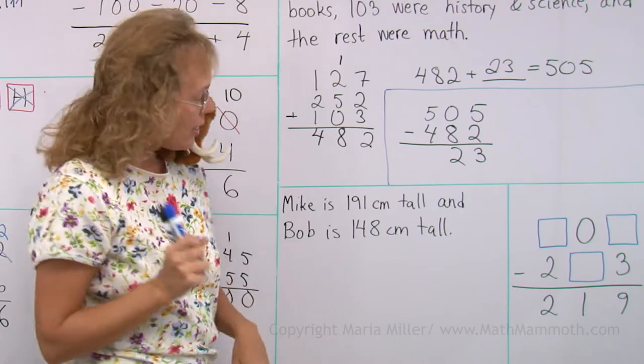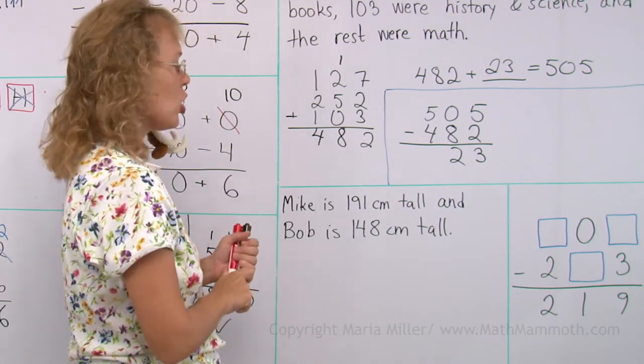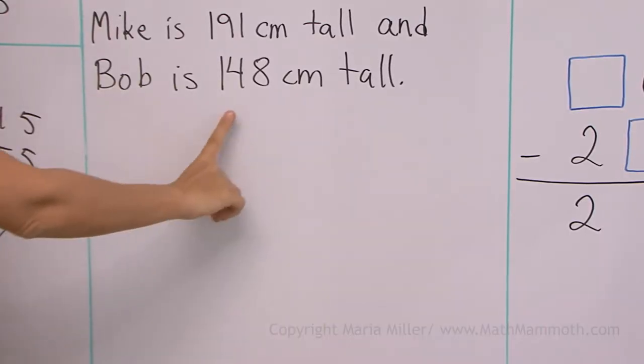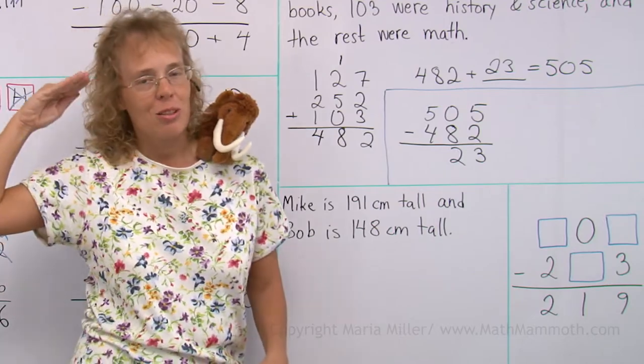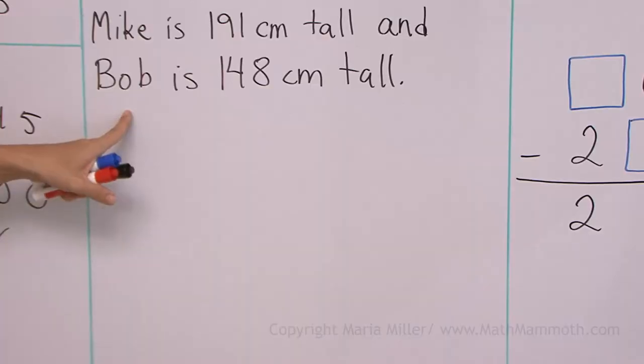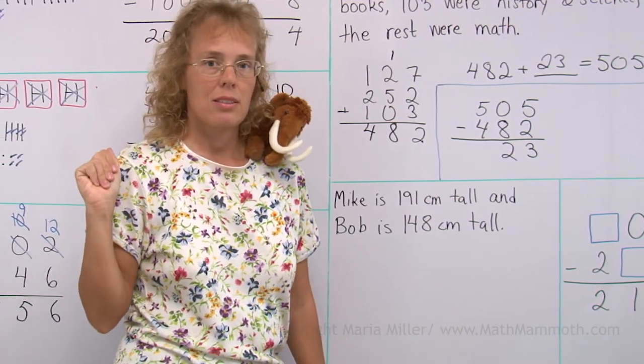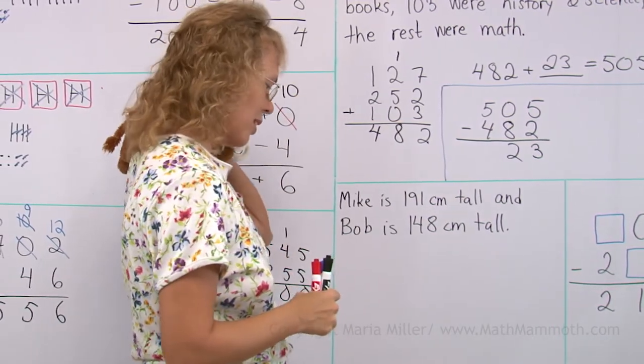Mike is 191 centimeters tall. That's pretty tall. Much taller than what I am. And then Bob is 148 centimeters tall, which is shorter than I am. But there's no question again. What can we ask? Matthew has an idea.